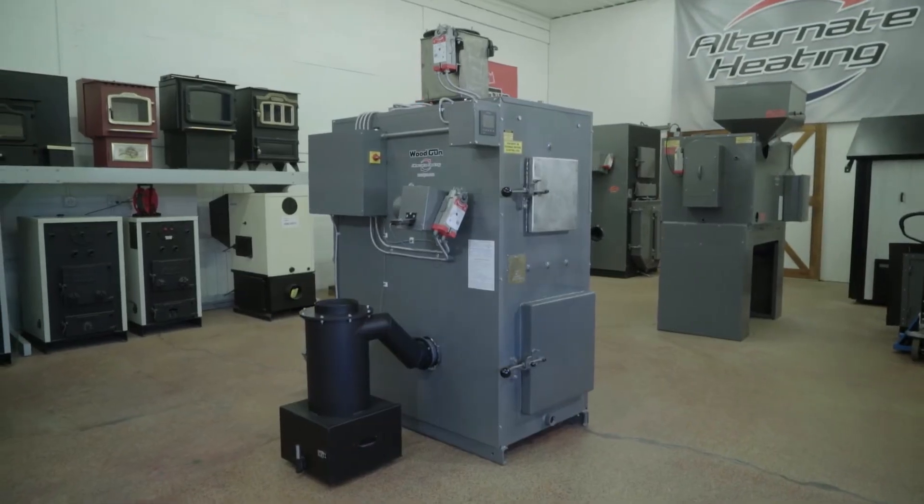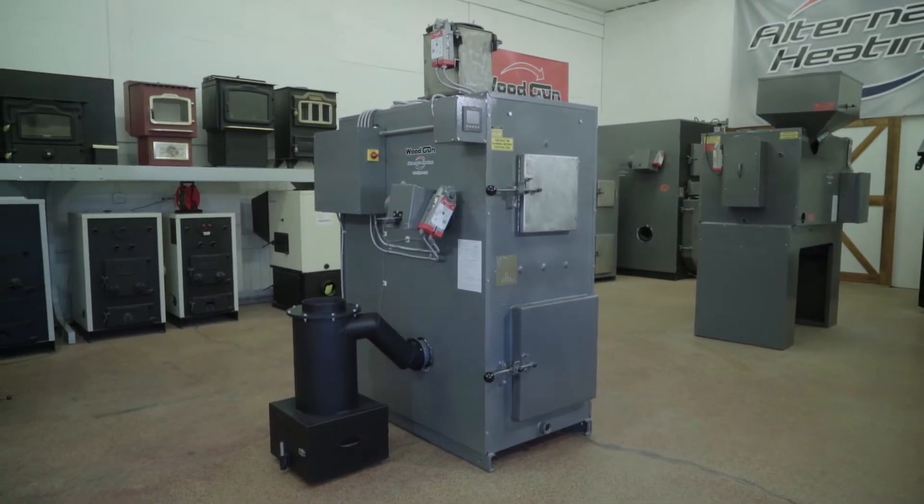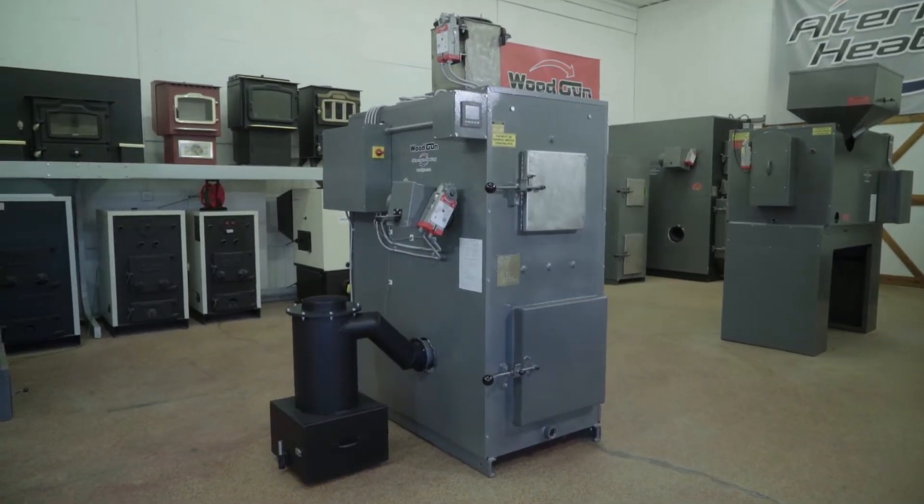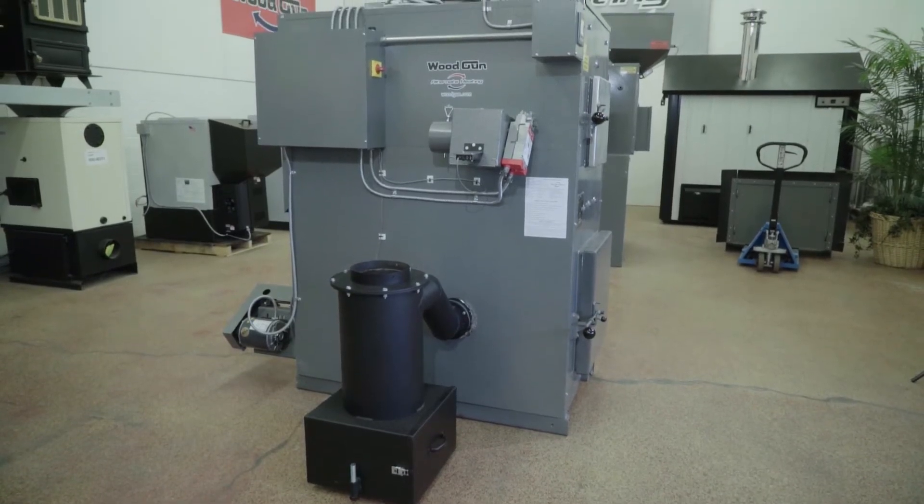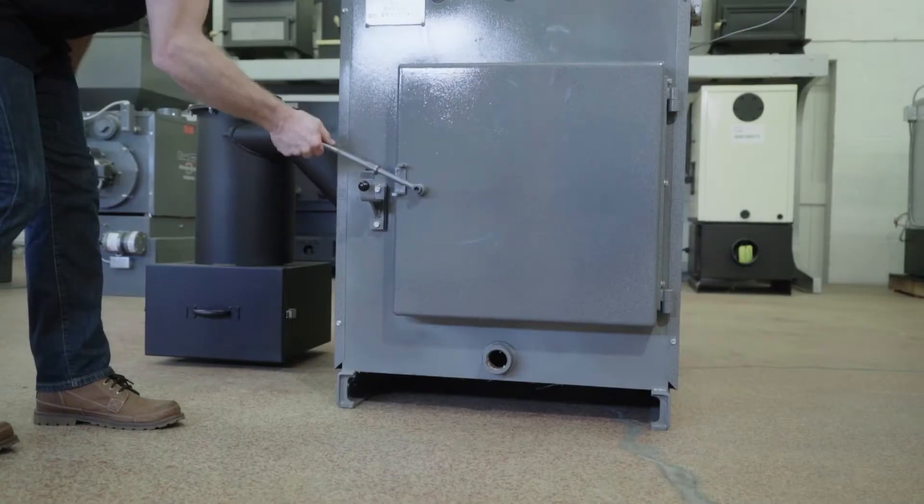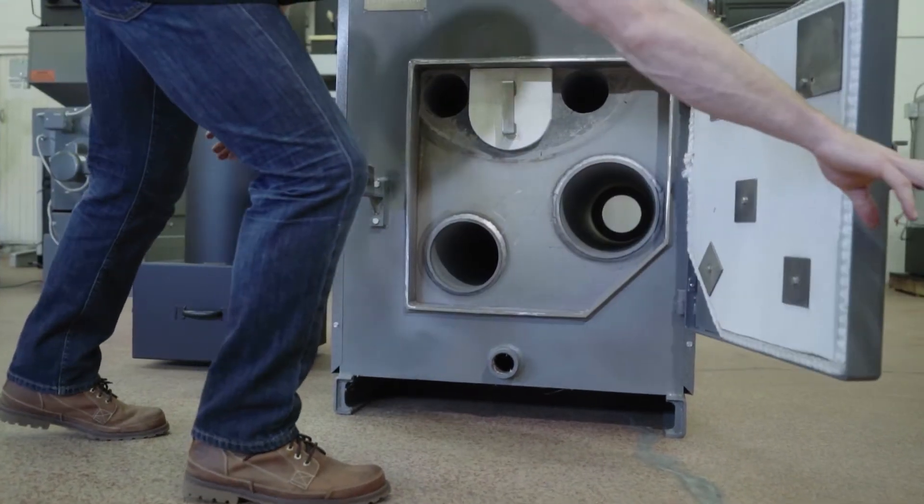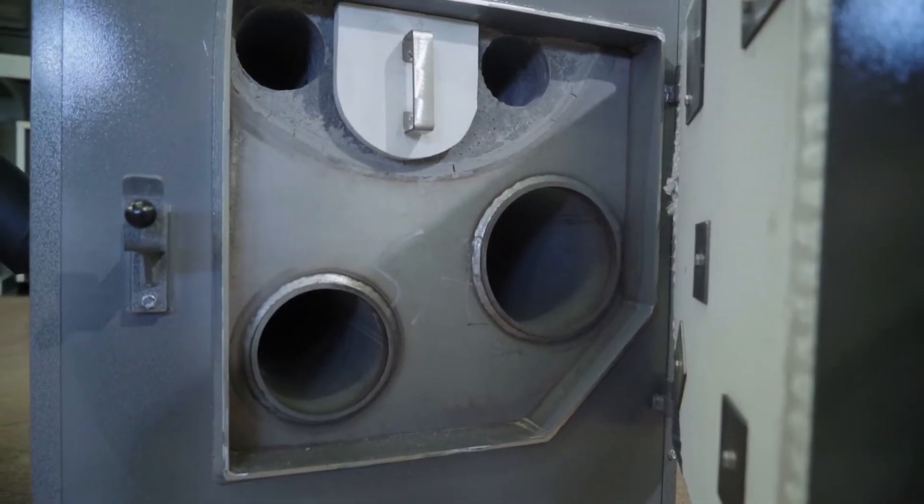The E250 Wood Gun is a wood gasification boiler and it is a true downdraft gasification system. You burn 60% less wood than your traditional wood boiler, and we do this by using refractory. This refractory captures the flame and runs it through a set of tunnels which burns the smoke or wood gases, which allows us to use 90% of the wood.